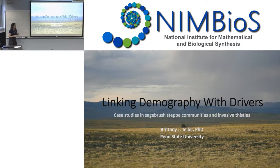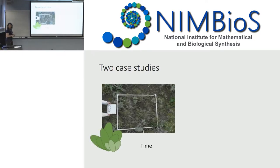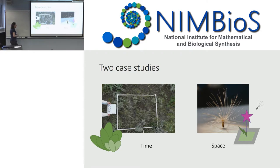Today I'm going to talk about two case studies integral to my grad and postdoc work. The first is from a community in a sagebrush steppe ecosystem where we have grasses and sagebrush together in a community persisting stably, apparently, over long terms. This is a meter square quadrat where you can see individuals. The second is about an invasive species called Carduus nutans, a thistle that's invasive in North America.